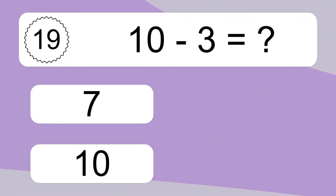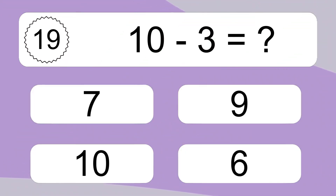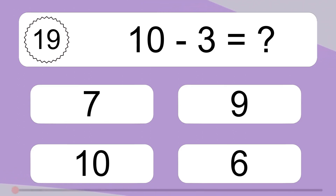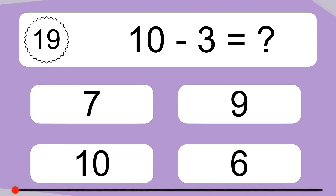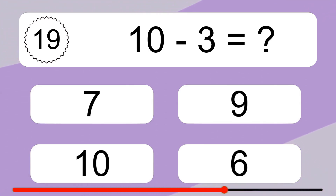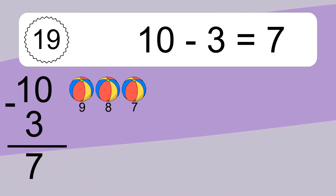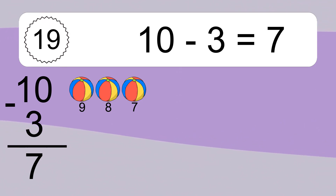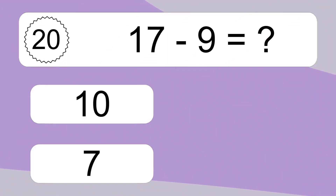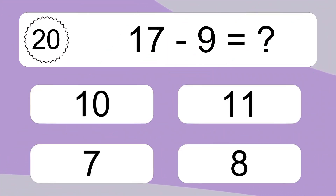10 minus 3 equals what? 10 minus 3 equals 7. Let's count it: 9, 8, 7.